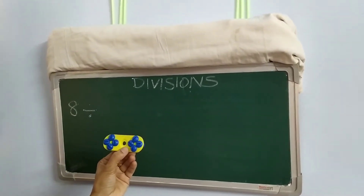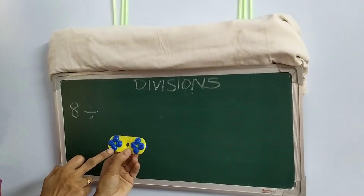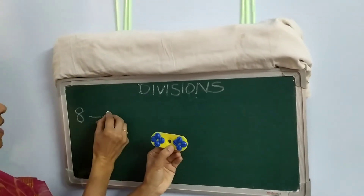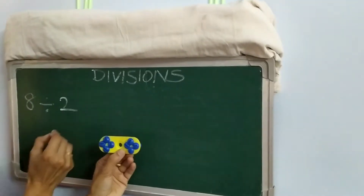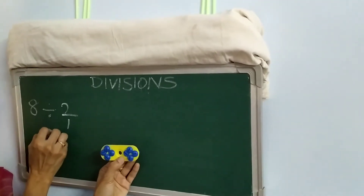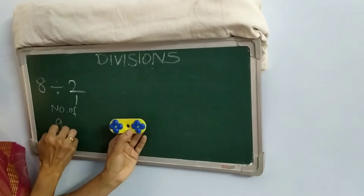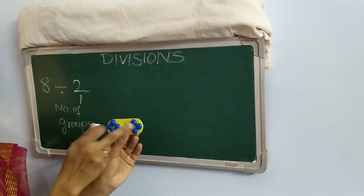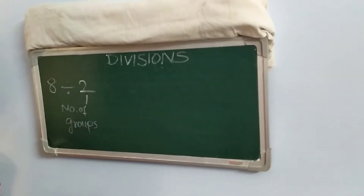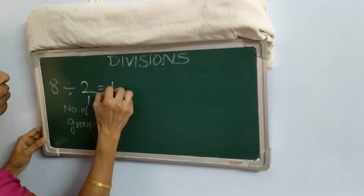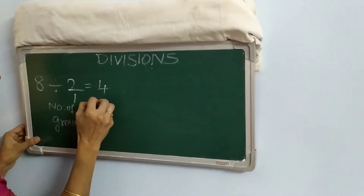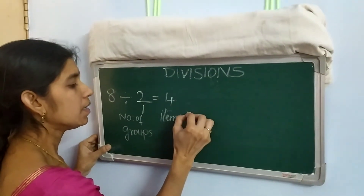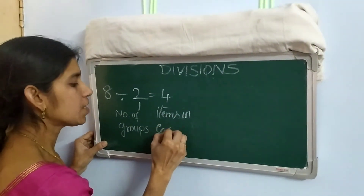Now how many did each group get? One, two, three, four — and one, two, three, four. I divided into two groups — that is the number of groups. So in each group we are getting four bowls, which means the number of items in each group is four.